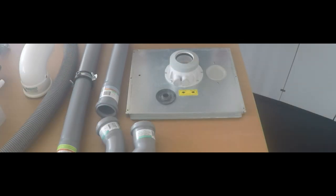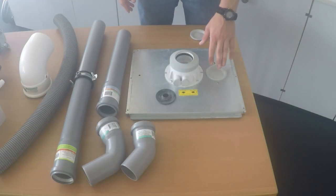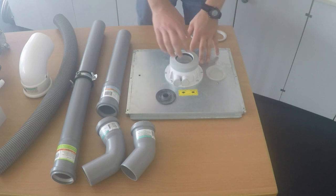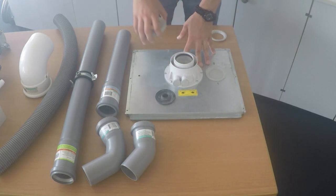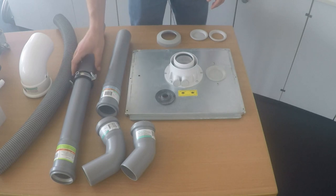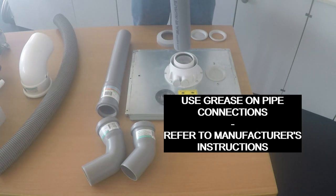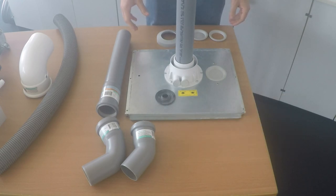The second venting method is the single pipe system. For this one, we will leave this cap alone. And instead, we will remove this cap on the center assembly. And we will take our flue gas pipe and simply put it in the middle. And this will allow the intake for the boiler to come in through this outside ring.